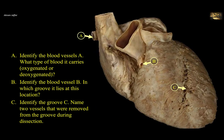Identify blood vessel A and what type of blood it carries. Identify blood vessel B and in which groove it lies. Identify groove C and name the two vessels removed from it during dissection. This is an anterior view of the heart showing the right atrium at the right border, receiving the superior vena cava. Vessel A lies in a horizontal direction — it is the right pulmonary vein that continues behind the heart to open into the left atrium, which forms the posterior chamber of the heart. This pulmonary vein carries oxygenated blood from the lung to the heart.